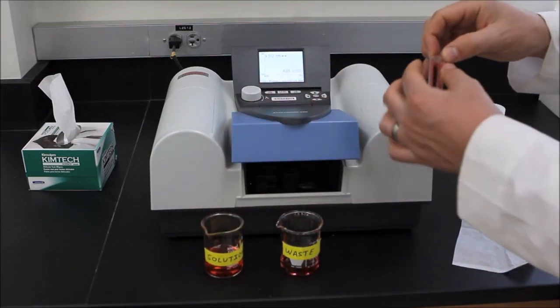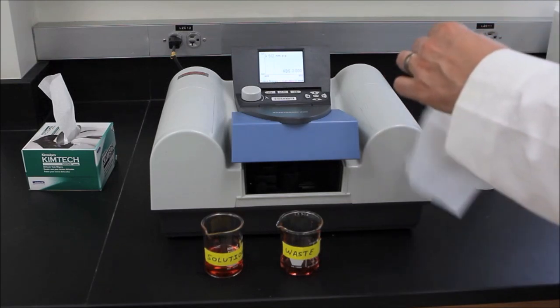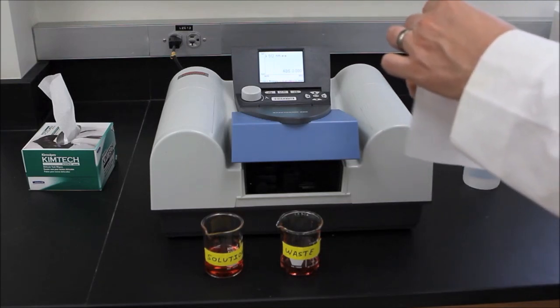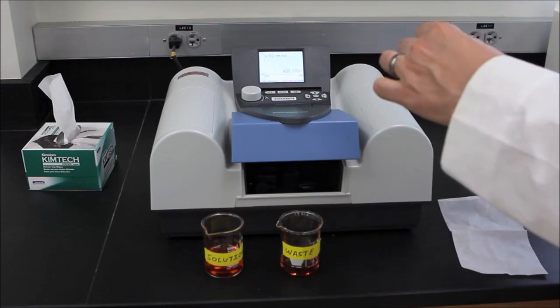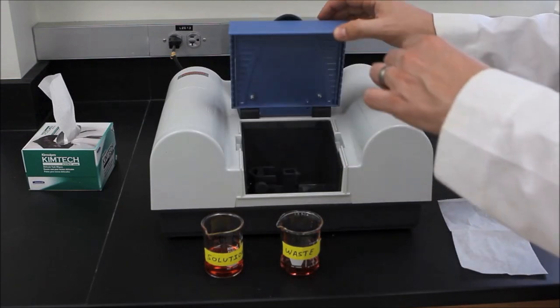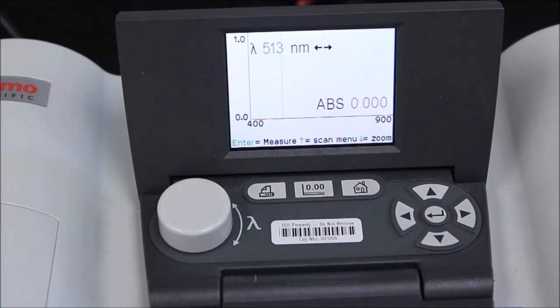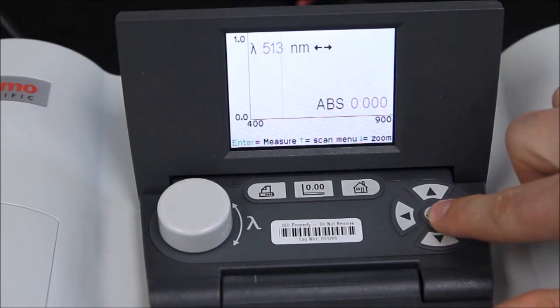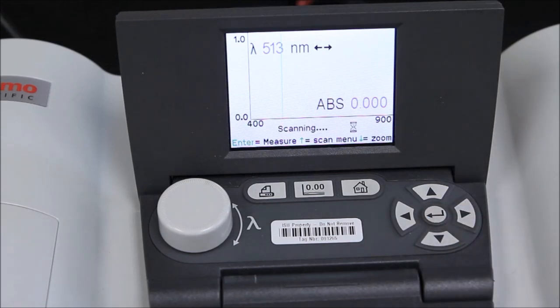Make sure to wipe the non-frosted sides with a chem wipe. Then place the cuvette in the cuvette holder oriented such that the triangle is facing to the right. Close the sample compartment and press enter to generate an absorbance spectrum of your solution.